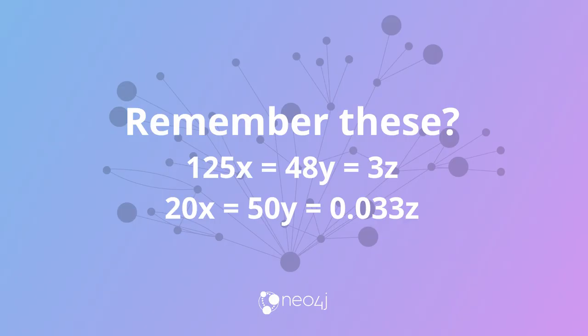So, do you remember when I started and asked: what is 125x equals 48y equals 3z? Or 20x equals 50y equals 0.033z? Now you know. A modest three-instance Neo4j cluster is the same as a 125-node MongoDB cluster or a 48-node Cassandra cluster. So the next time you're wondering if Neo4j will work at scale for you, think whether 150 MongoDBs or 48 Cassandras with many terabytes of data is enough — and then make the sensible choice and deploy a Neo4j cluster. I'm Jim Weber, Neo4j's Chief Scientist. I hope this has been a fun few minutes for you. I'll see you in the Neo4j community.